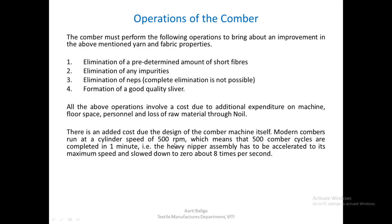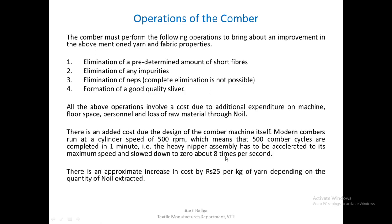Modern Combers run at a cylinder speed of around 500 rpm, which means the Comber completes 500 cycles in one minute. In this one minute, the heavy nipper assembly has to move to and fro, accelerating to a maximum speed and slowing down about eight times per second. This is quite a high speed and incurs some additional cost. Overall, there is an approximate increase in cost of around 25 rupees per kg of yarn, and this will depend on the quantity of noil or waste extracted at the Comber.